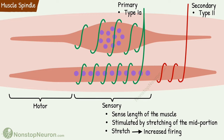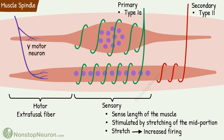So that was the sensory supply of the muscle spindle. The spindle also receives a motor supply, which innervates the contractile ends of the intrafusal fibers — this is the gamma motor neuron. To note, the extrafusal fibers are innervated by alpha motor neurons. Thus, the contractile ends of the muscle spindle and extrafusal fibers receive different motor innervation.